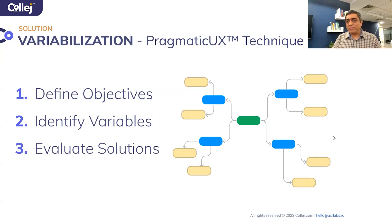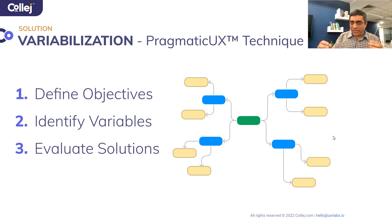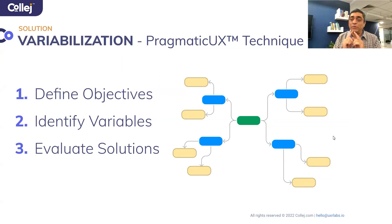When we think about the pragmatic UX technique of variabilization, the first step is you have to understand why you're solving the problem — that's where you define your objectives. The second part is identifying all the different elements you can play with: what are the variables that will help you solve the problem? The final step is evaluating the final solutions. With this three-step process, you can quickly look at a problem, review available options, and decide which solutions work for you.